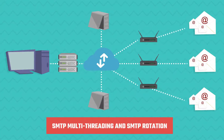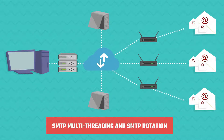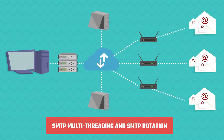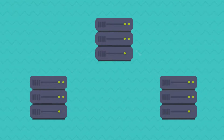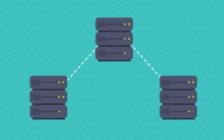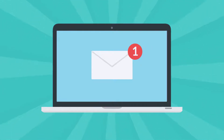CBT Bulk Email Sender supports SMTP multi-threading and SMTP rotation. This means that the software can send thousands of emails at lightning fast speeds and rotate between multiple SMTP servers to warm up your IP and help you achieve a high inbox rate.